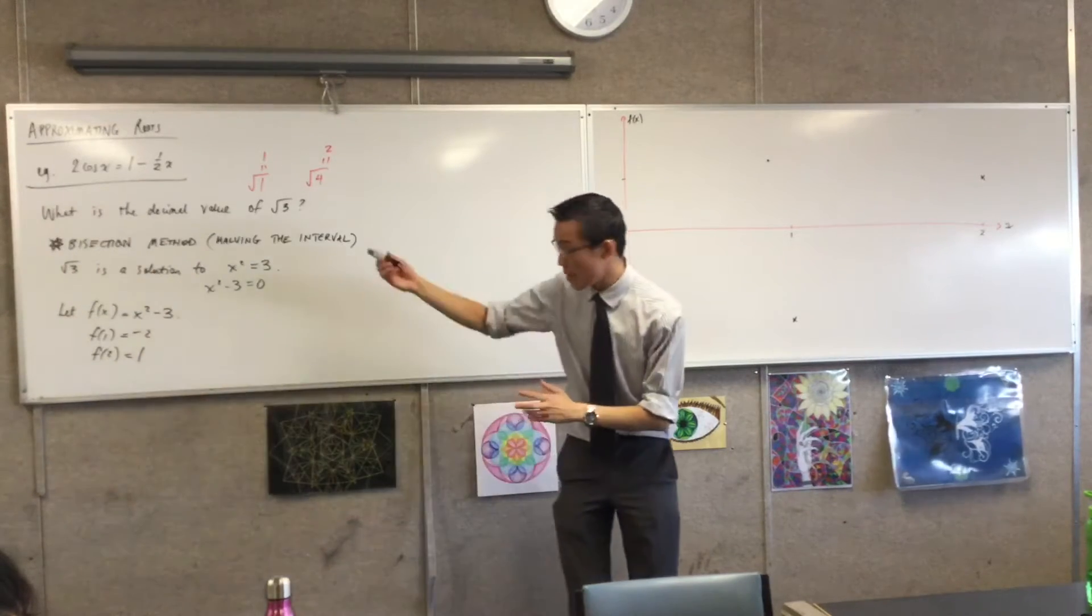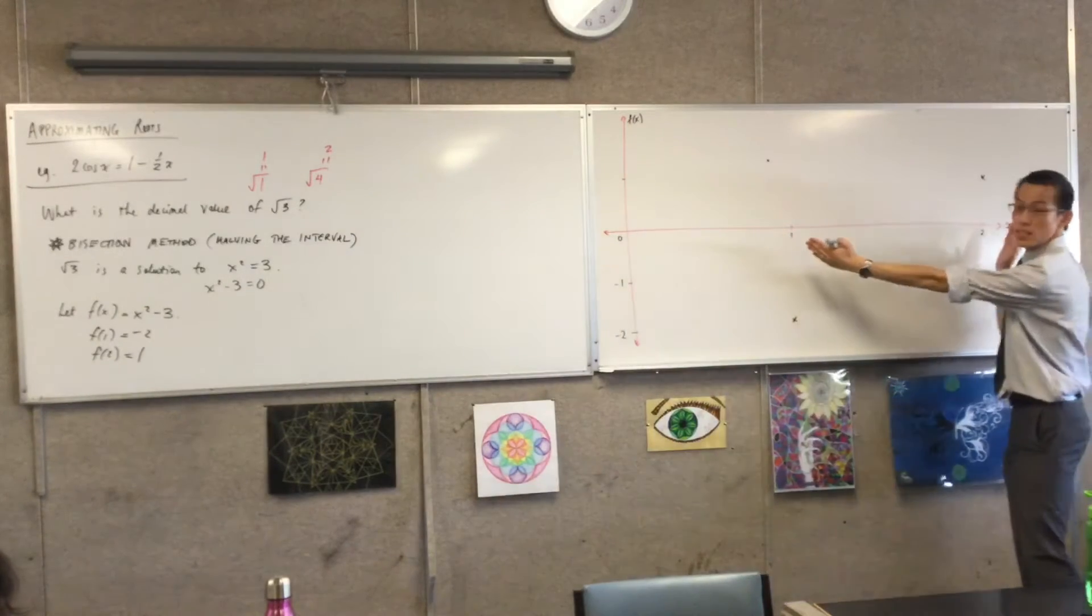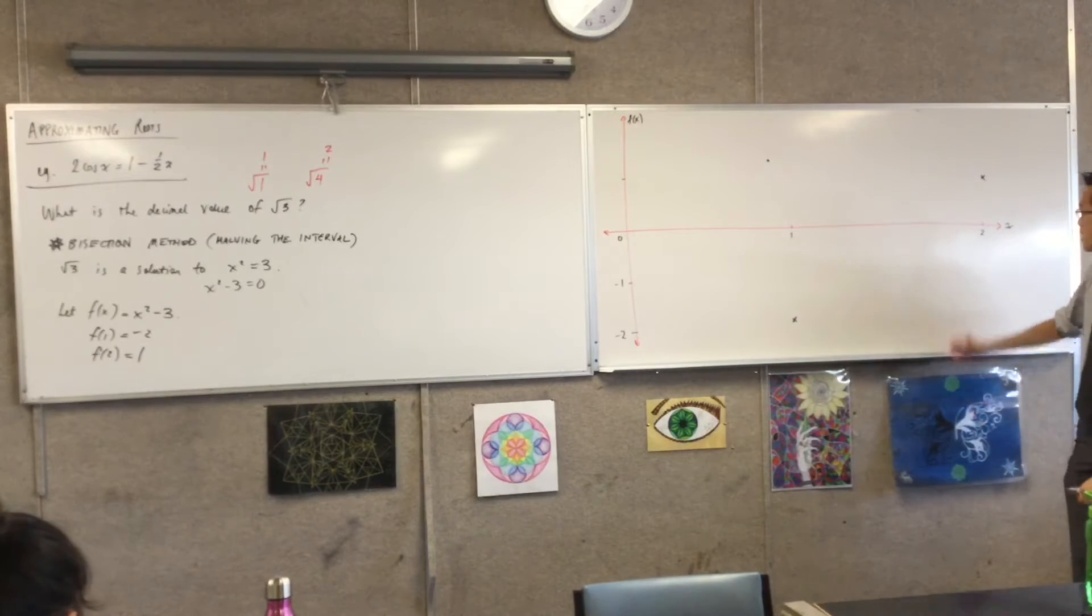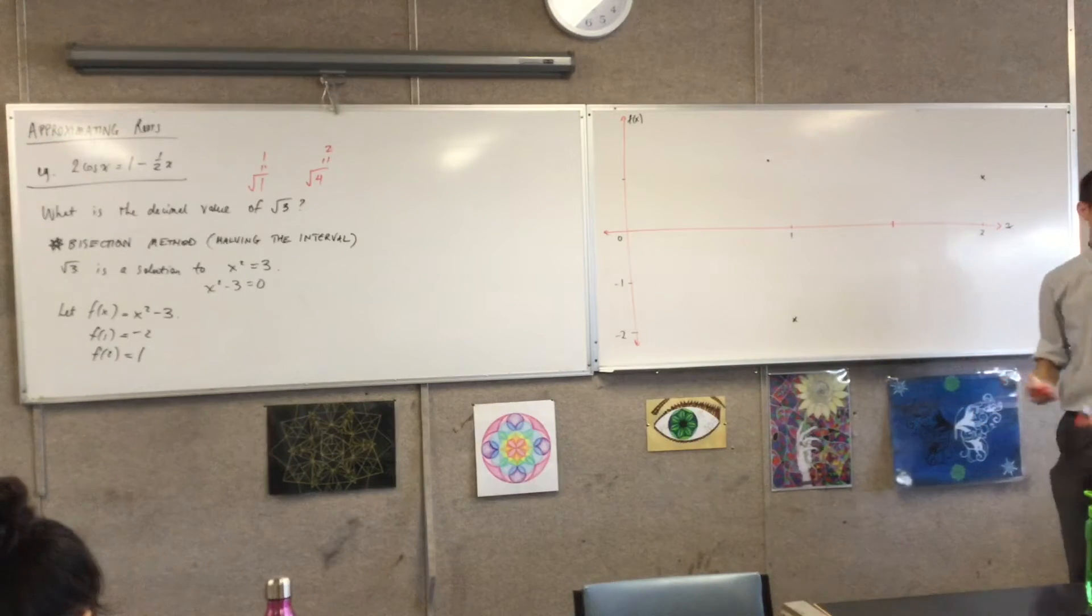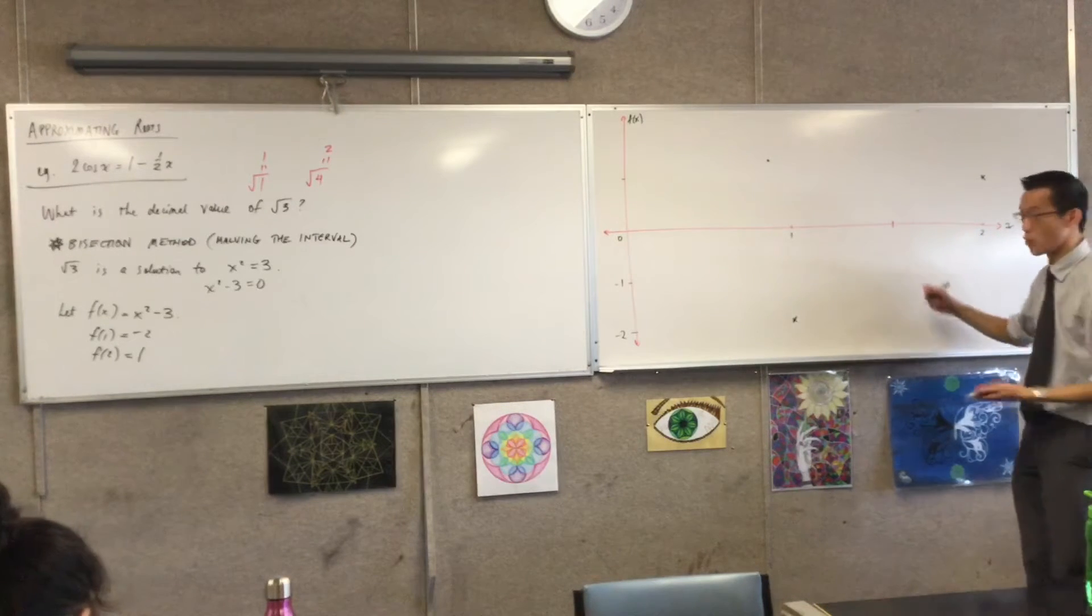So here's where the name of this comes in. If I take this interval, this interval here, and I know the root has to be somewhere in here, and if I halve it, if I bisect it, right? What value is that? It's 1.5, or 3 on 2.